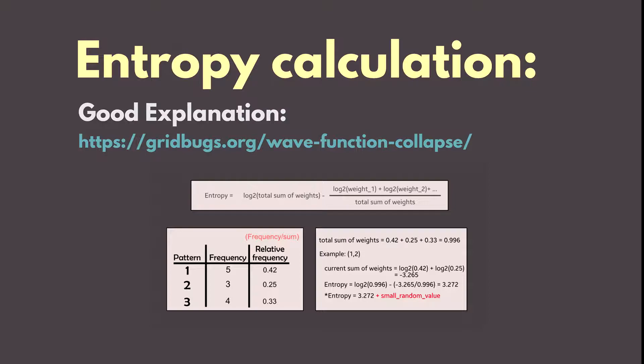An important addition is the small random value. This is a value that will be added to the entropy score for a sole reason of comparison. Imagine we have a list of cells with low entropy. Many of them have the same list of possible patterns, making the entropy value the same for each cell.